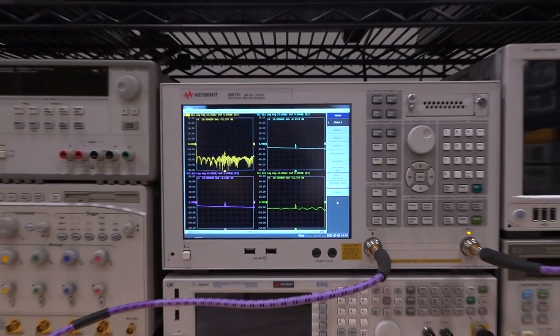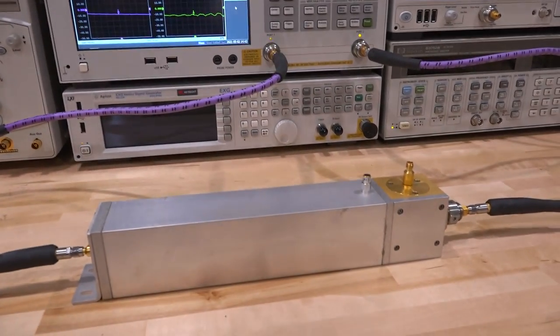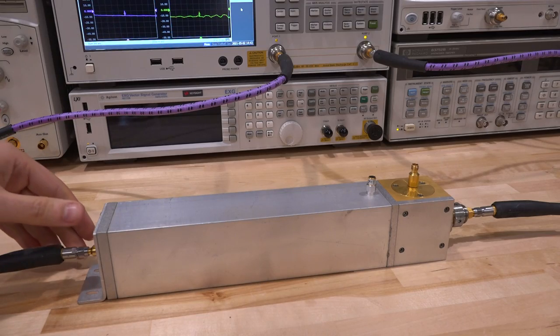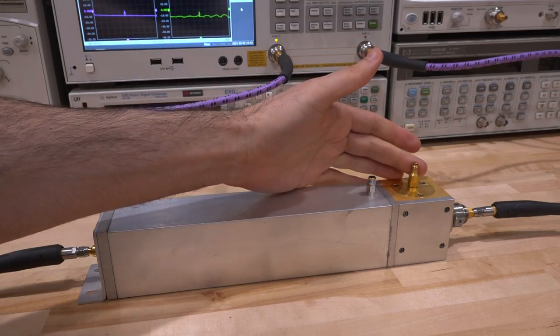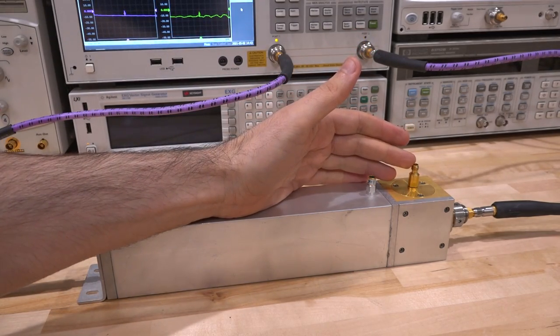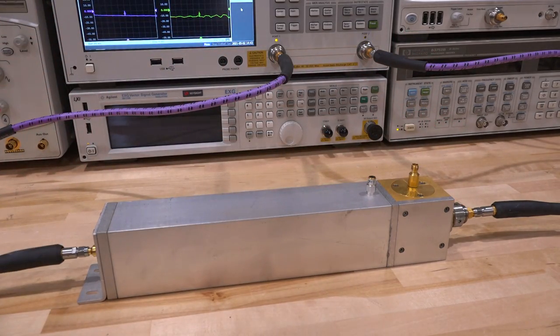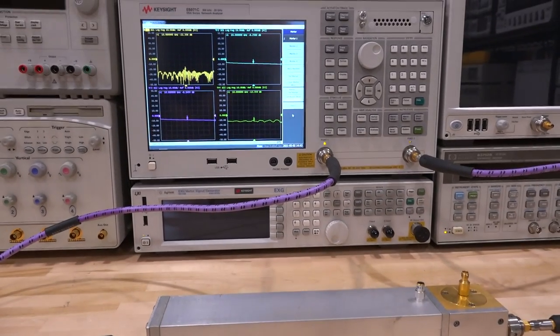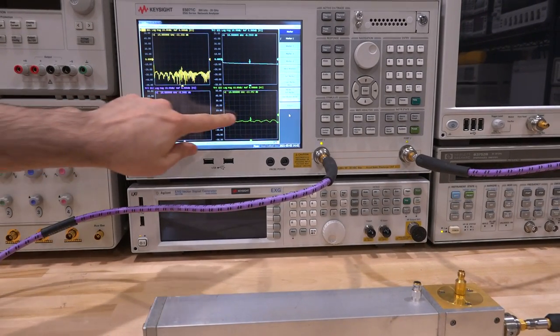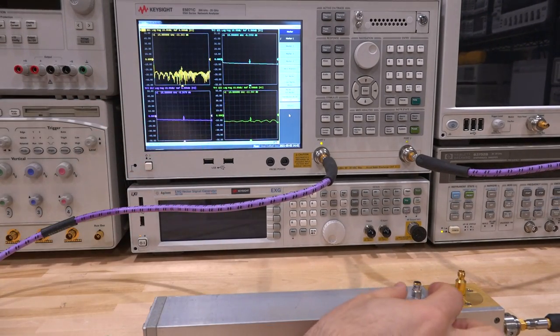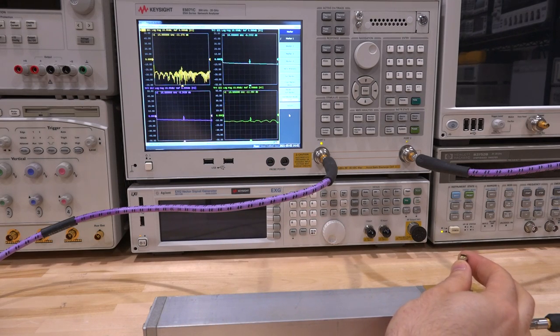But why do these not match? Well, this actually tells us something really important about the property of this coupler. It basically tells us that in this coupler we have very good isolation between this port and this port. Because the unterminated port here causes the return loss of this port to be bad, but not of this one. And we can observe this by actually putting the attenuator back.